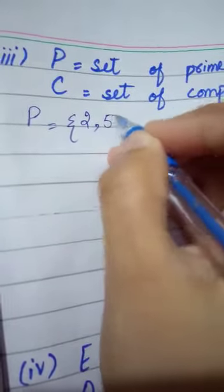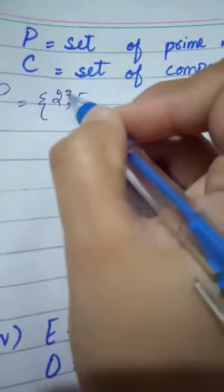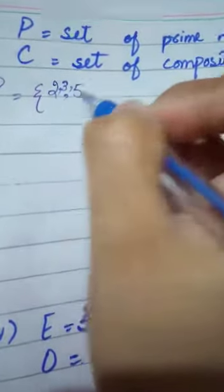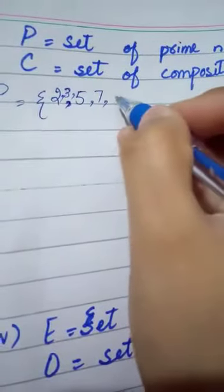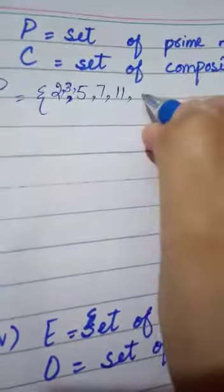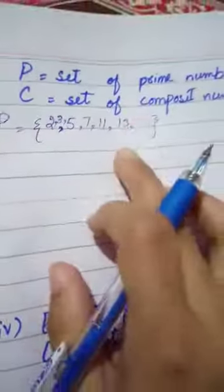P is equal to 2, 3, 5, 7, 11, 13, and so on. This is a large number; it's enough. As you said, infinite set, its limit is not going to end. Next,